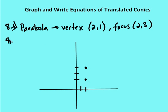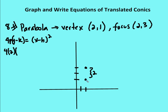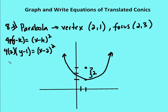I'm working with the equation 4p times y minus k equals x minus h squared. I need to fill in p, k, and h. My p value is 2 because there are 2 units from the vertex to the focus. So I have 4 times 2. My k value is 1, the y-coordinate of the vertex, and my h value is 2. This gives me 8 times y minus 1 equals x minus 2 squared.